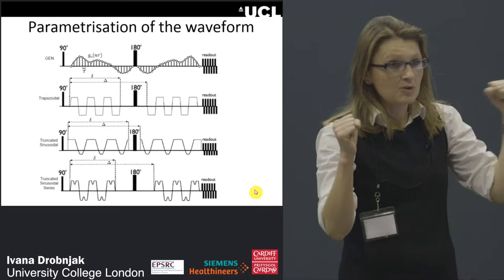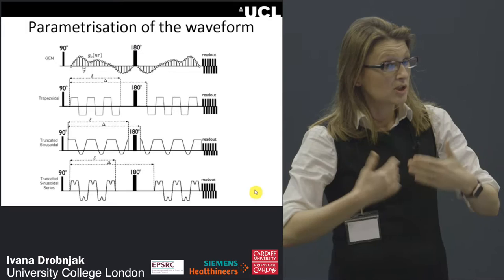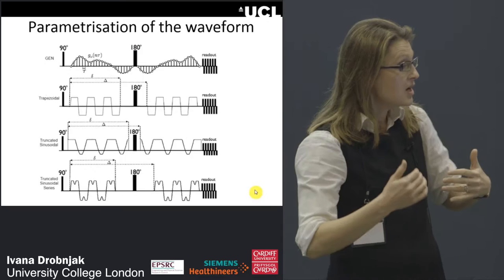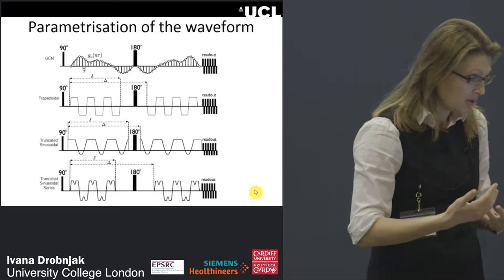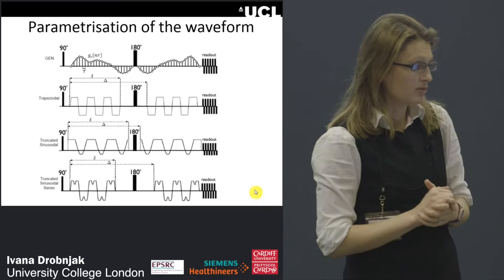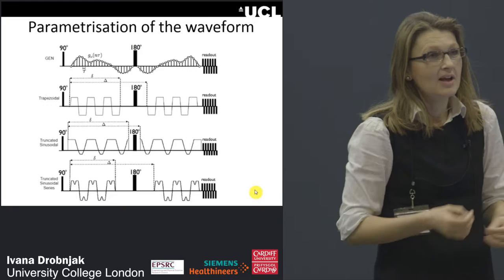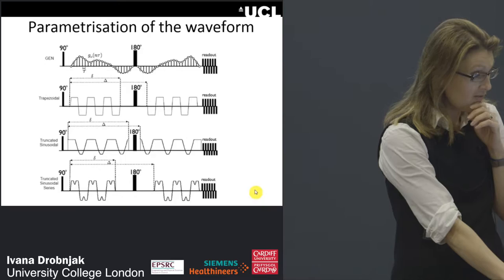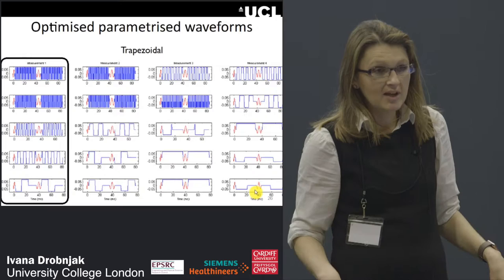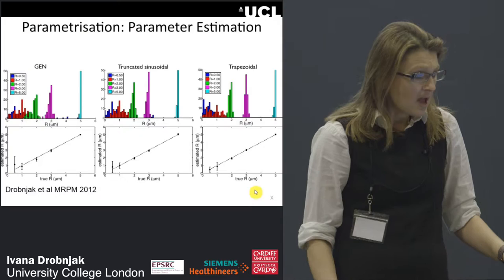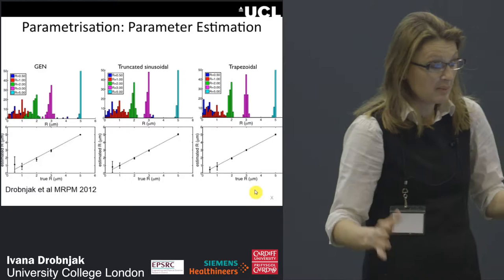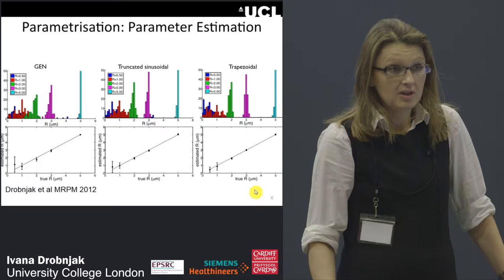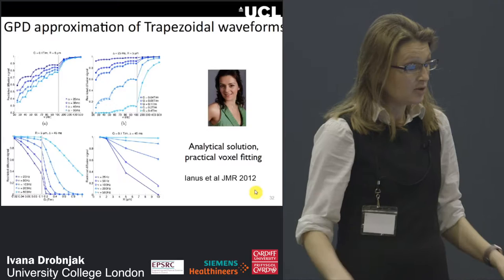To make these waveforms practical for fitting whole-brain datasets, I thought we needed to parametrize them. I tried a range of parametrizations: trapezoidal, sine-trapezoidal, cosine-trapezoidal, truncated sinusoidal, sinusoidal harmonics, and others — with an MSc student who really enjoyed tweaking these sequences. What we found was that a simple trapezoidal parametrization was most effective, giving results very similar to the generalized waveforms while being the easiest to implement on the scanner.